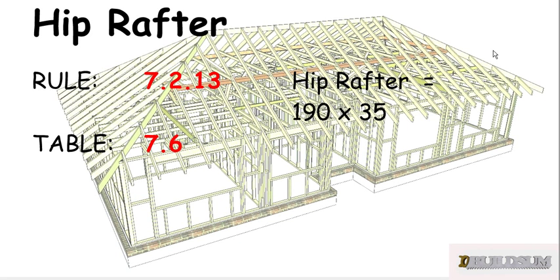So that's how we work out the size of our hip and valley members or hip and valley rafters. In this case we're going to use 190 by 35.